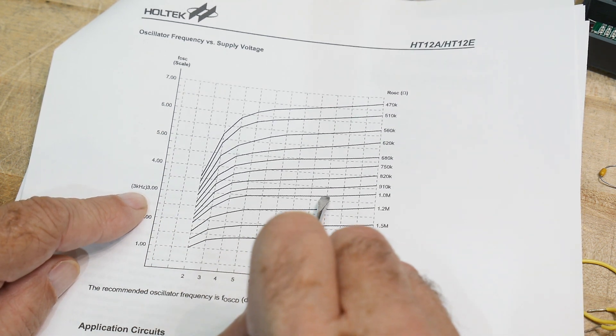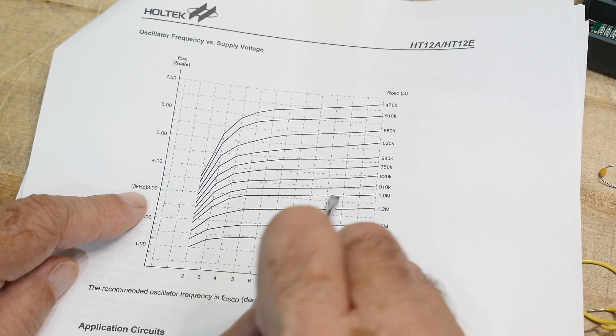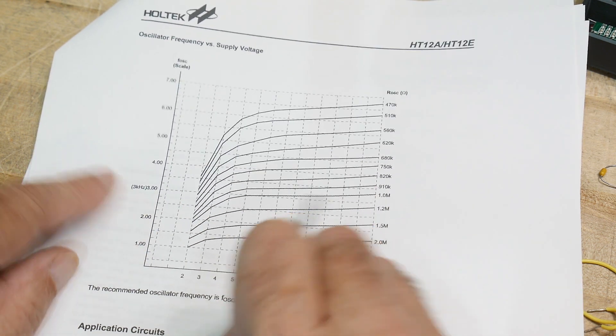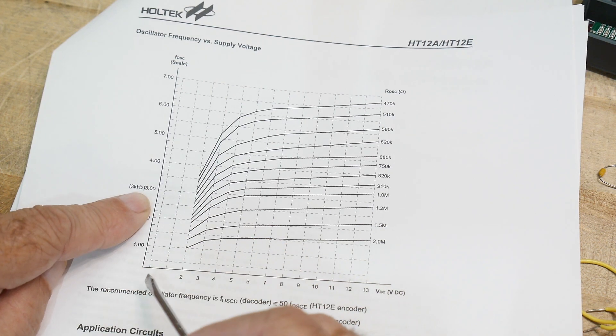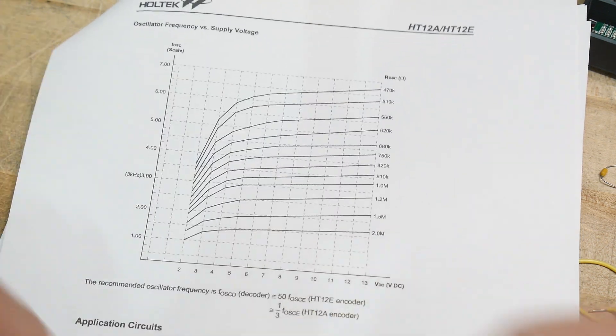Yeah, I think I have one meg resistor and we're at 10 volts. So it should be around three kilohertz of data speed here. So three kilohertz times 50 would be 150 kilohertz.